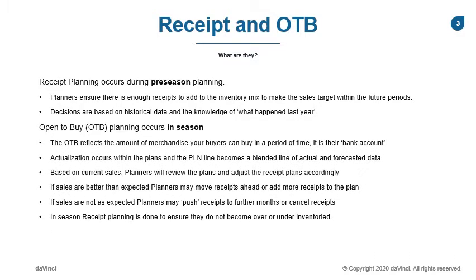Open to buy planning occurs in season. Think of the open to buy as your buyer's bank account set by the planners. Actualization occurs and is combined with the plan data creating a blended plan. It's with this blended plan that the planners will revise their receipt plans to support what is currently happening with the future forecast. If sales are trending up, planners may need to add or bring forward receipts. If sales are trending down, they may push out receipts or cancel them altogether. The planners are re-forecasting within the open to buy to ensure they do not become over or under-inventoried.